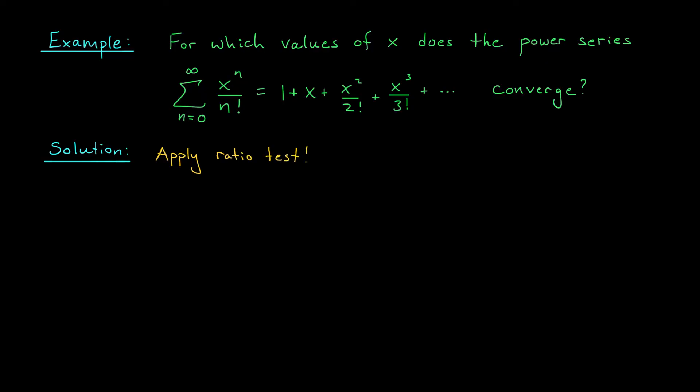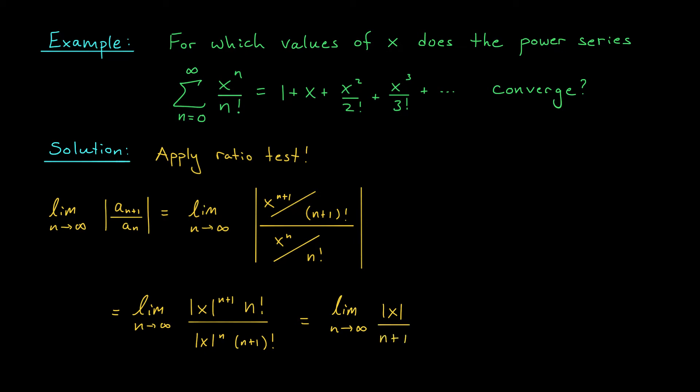If I want to use the ratio test here, what do I have to calculate? Oh yeah, the limit as n goes to infinity of the absolute value of a_{n+1} over a_n. In this case, we're looking at the limit as n tends to infinity of x to the n plus 1 over n plus 1 factorial divided by x to the n over n factorial. And all of this is an absolute value. Now don't get intimidated by this x in your limit calculation. Remember, we're treating x like an arbitrary constant. So we'll simplify this expression and evaluate the limit in the same way that we always do. We have the limit as n tends to infinity of the absolute value of x to the n plus 1 times n factorial divided by the absolute value of x to the n times n plus 1 factorial. Some cancellation occurs, and I'm left with the limit as n tends to infinity of the absolute value of x over n plus 1.